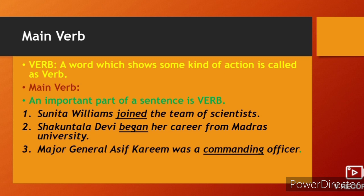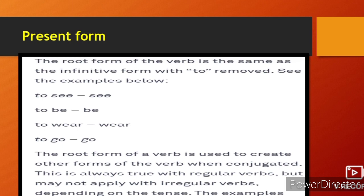What is the present form? The root form of the verb is the same as the infinitive form with 'to' removed. So the infinitive form hota hai, usse basic ya root form of the verb kehenge. Usme se 'to' nikal dena hai — jaise 'to see' se 'to' nikala toh 'see', 'to go' se 'to' nikala toh 'go'. The root form of a verb is used to create the other forms of the verb when conjugated.